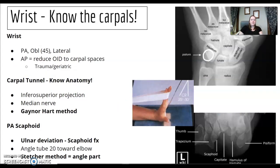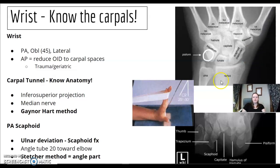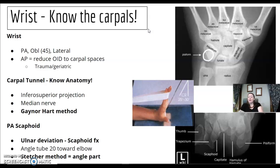Wrist. PA oblique is 45 degrees lateral. What do you want to see on the lateral? You want to see superimposed radius and ulna. When would you use an AP wrist instead of PA? Trauma, geriatric. The benefit of doing an AP wrist is it would reduce the OID to the carpal spaces. We do a loose fist for the PA wrist to also reduce that space.